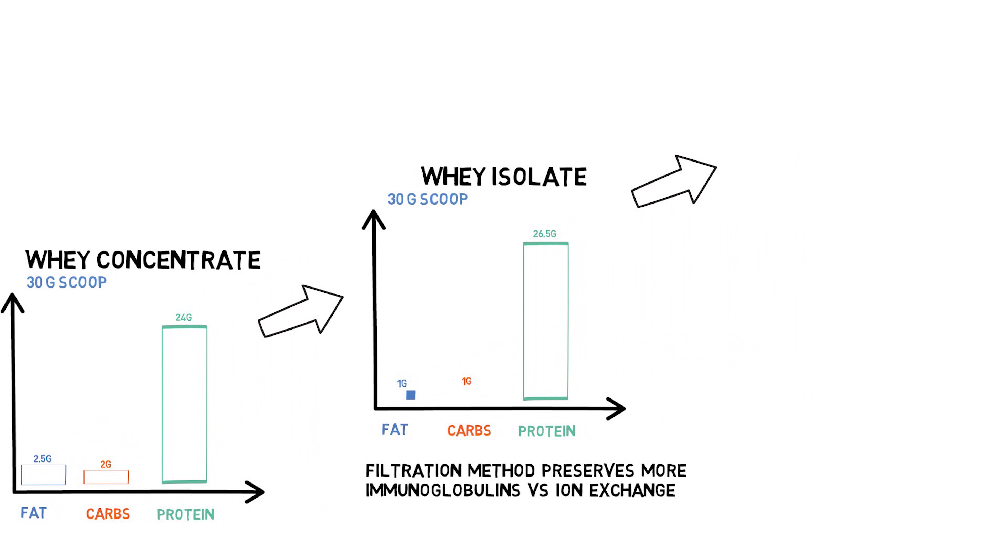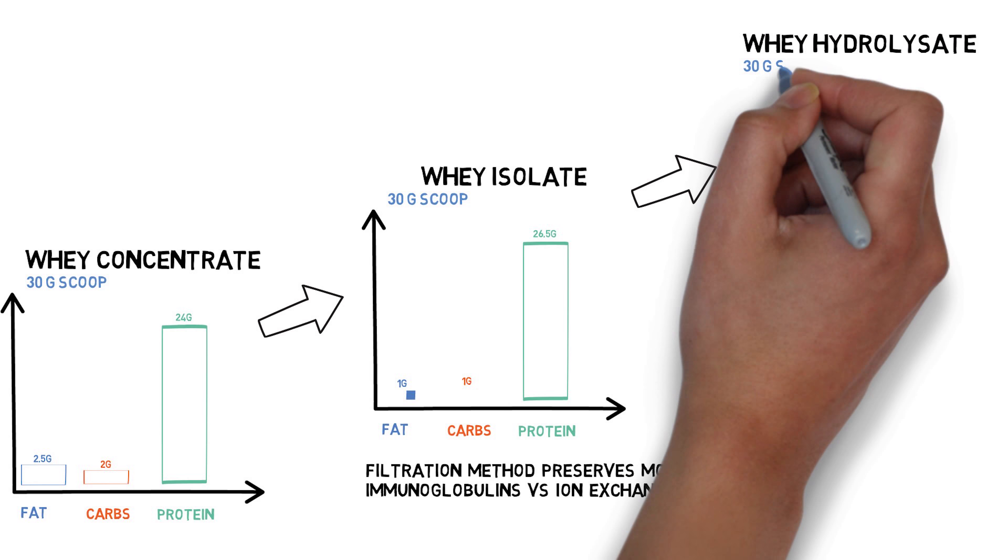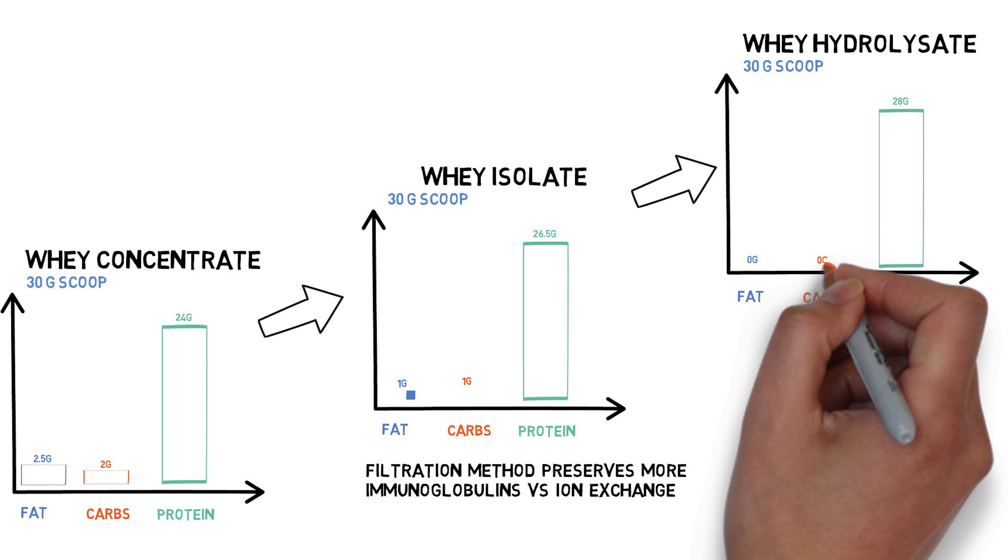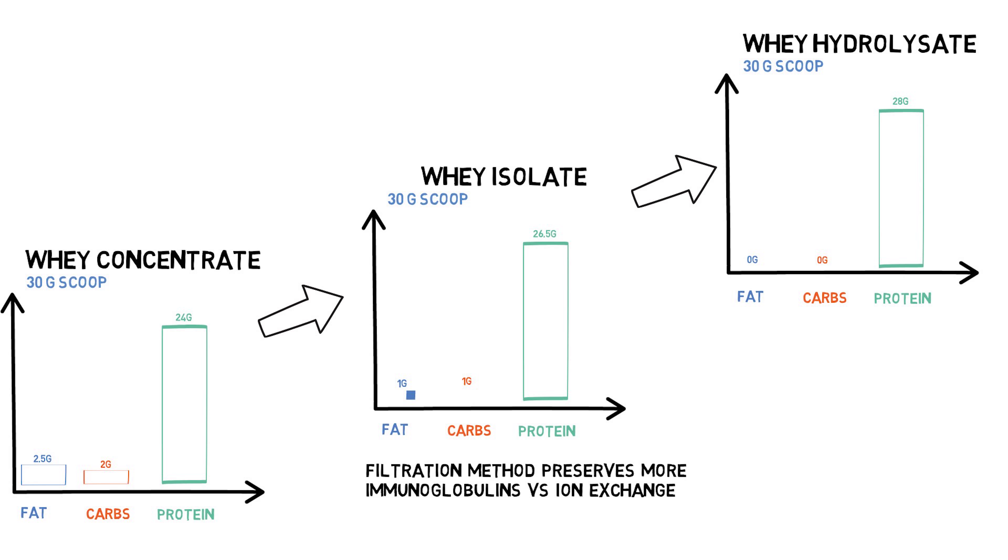While whey protein isolates are over 90% protein, there were some people who wanted something that was even more pure, such as labs which were doing testing. This led to the development of whey hydro isolate. This is an even purer form of protein, up to 99%. However, it is highly processed, so it costs more to buy and has lost all of the immune boosting effects. It is also known for not tasting that great.